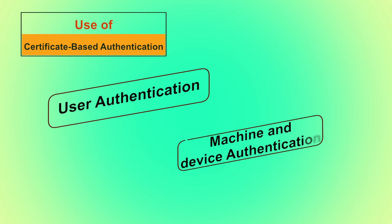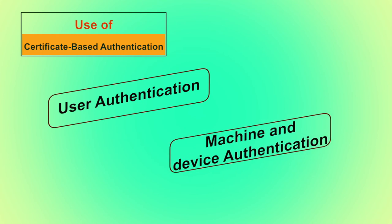One differentiator of certificate based authentication is that unlike some solutions that only work for users, such as biometrics and one time passwords, the same solution can be used for all endpoints: users, machines, devices and even the growing Internet of Things, IoT. It is used in combination with password based authentication to provide better security. Overall, it not only provides user authentication but machine and device authentication as well.